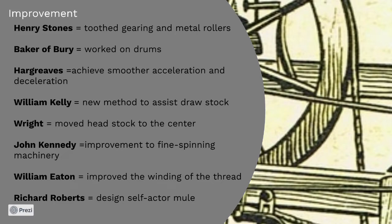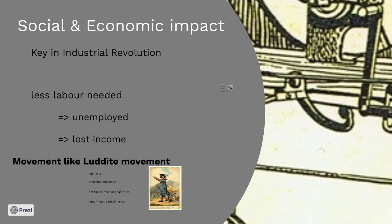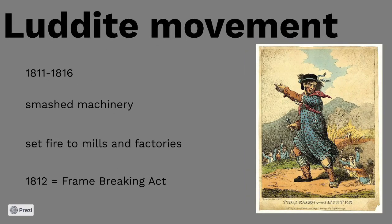For the last part, I will talk about the social and economic impact of the spinning mule. First, it was one of the key points of the Industrial Revolution. But as one machine took the place of several skilled workers of the cottage industries, a lot of workers were fired, families lost incomes, leaving people destitute and hungry. Several protests and movements took place, like the Luddite movement, which took place between 1811 and 1816. Unemployed people smashed machinery and set fire to mills and factories.